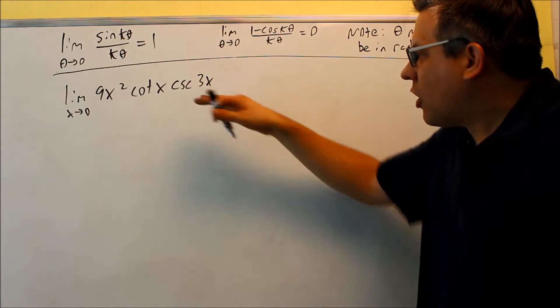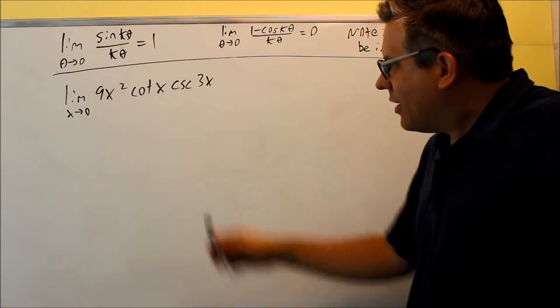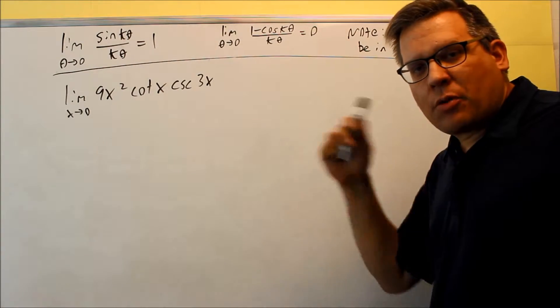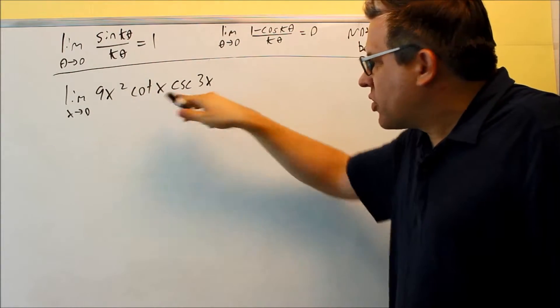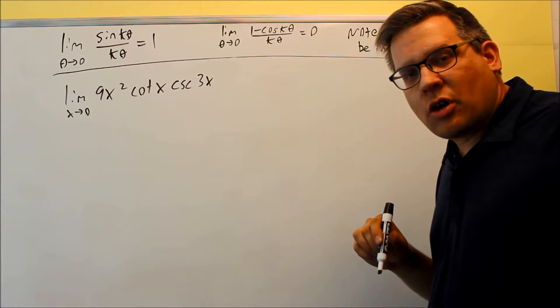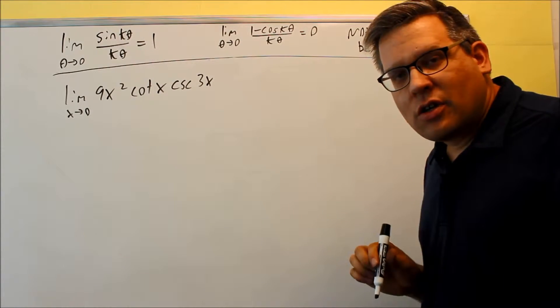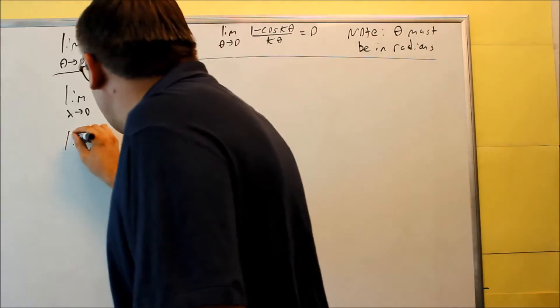Okay we're going to do one more that involves limits and trig. This one is going to require us to have to remember some identities from trig. Particularly the cotangent and cosecant I want to write those in terms of sines and cosines. So I've got to apply identities to both of those. That's the first thing that we'll do.